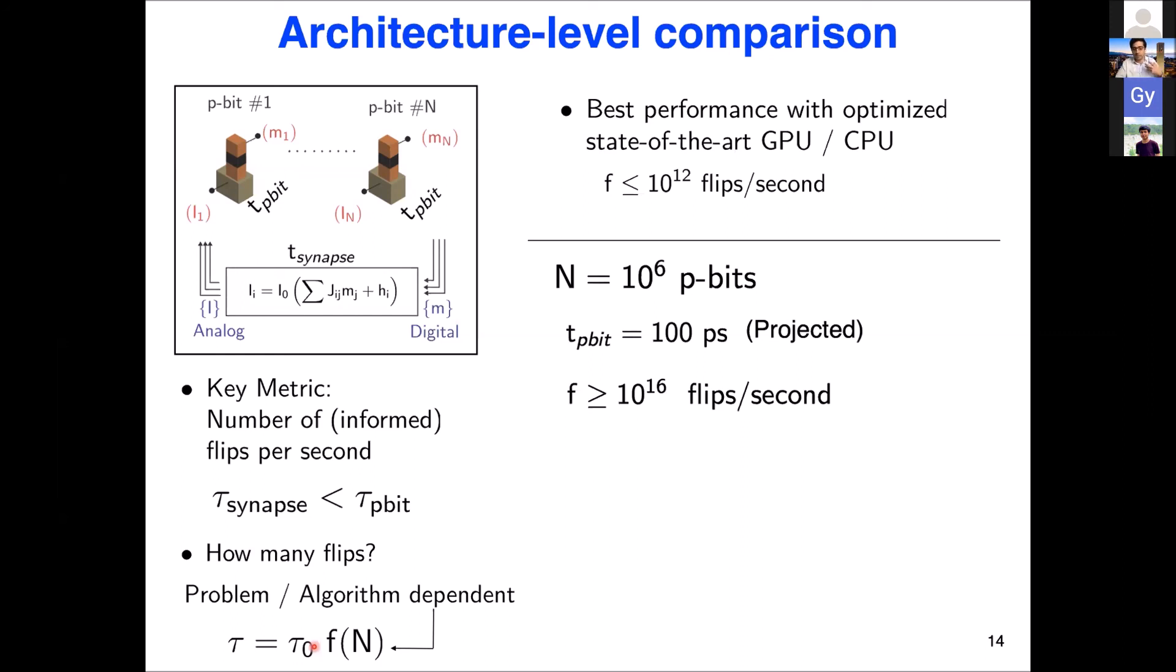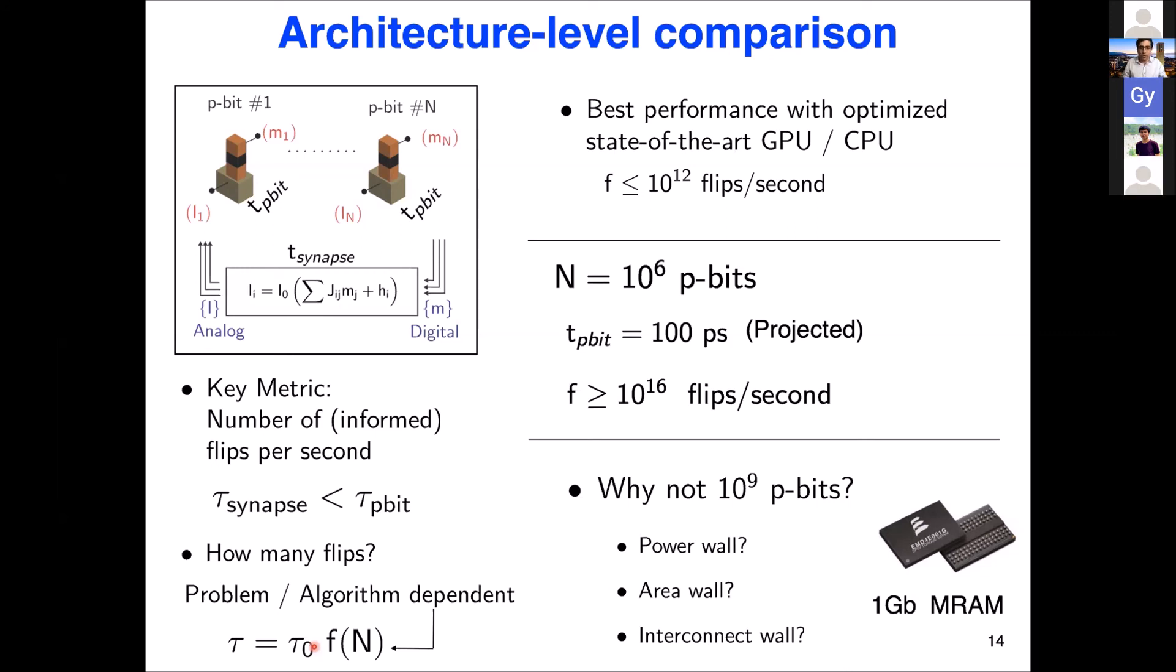Now, if you have a million pbits, each flipping with 100 picoseconds. And as I said, based on this experimental demonstration, this is not far from truth. You can have N over tau, you can have 10 to the 16 flips per second. So it could be a much better annealer that works much faster than your GPU. And remember, this has nothing to do with magnet physics. It's just that you're asynchronously flipping and that turns to give you this massive parallelism. And you may ask, okay, one gigabit MRAM is out there. So why not, if you're making projections, why not, why don't we say like 10 to the 9 pbit? Well, if you design chips, you probably will, we'll probably face a power wall, area wall, interconnect wall. So one million is based on some thinking that maybe that can fit in these FPGA chips.